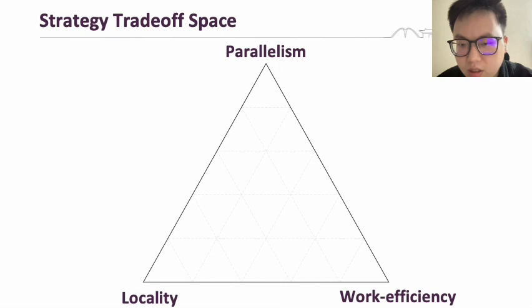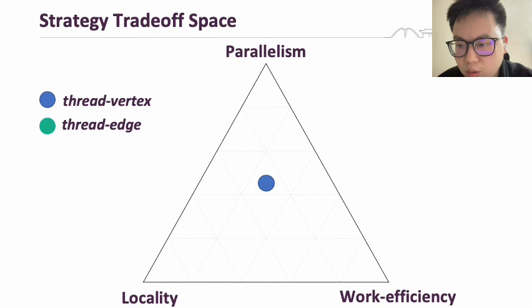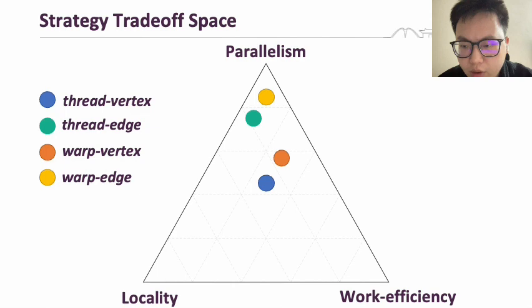Starting with the thread vertex at the central point, we analyze the thread edge. Since the number of edges in a graph is usually much larger than the number of vertices, edge-level strategy has greater parallelism. However, thread edge strategies reduce output reuse and potentially create read-write conflicts, resulting in lower work efficiency.